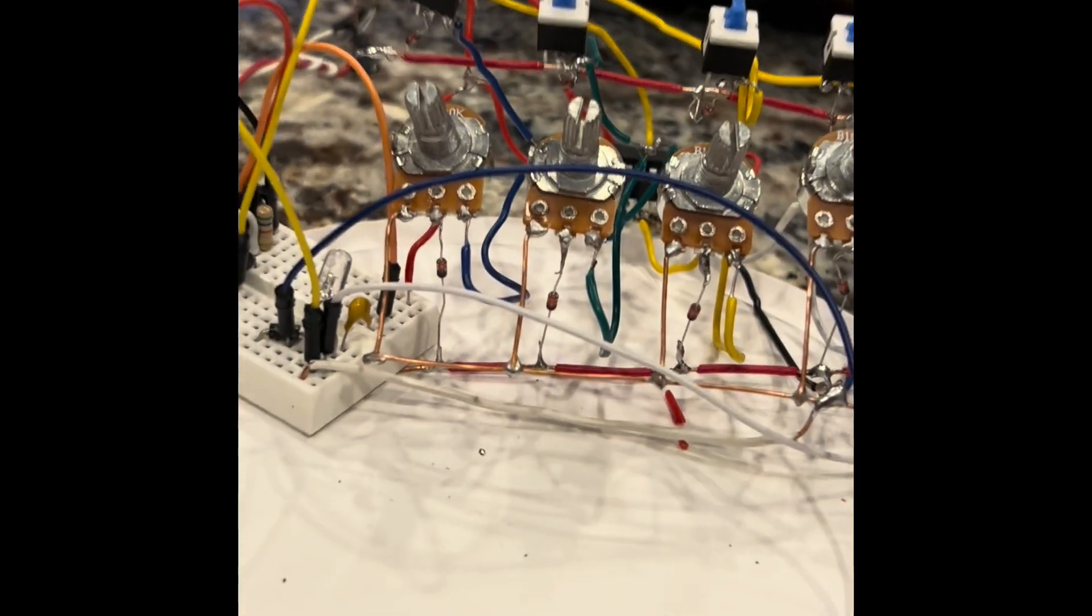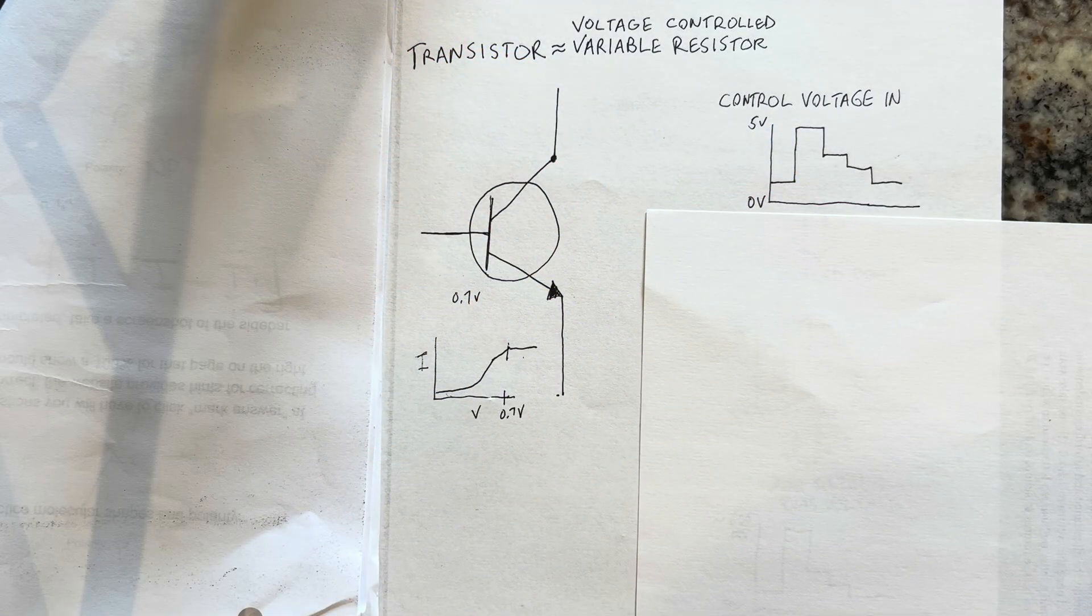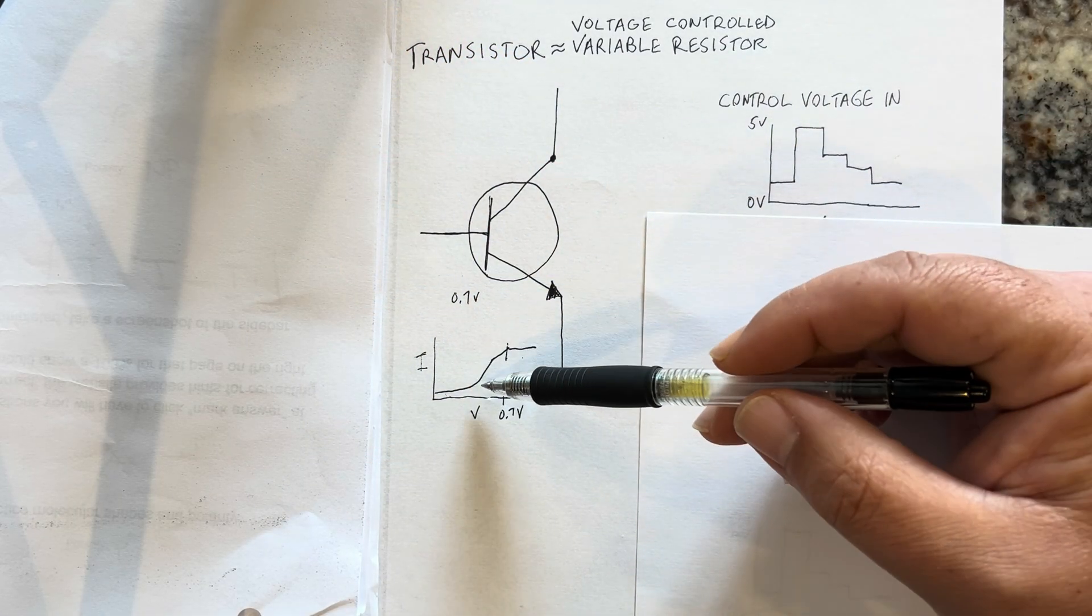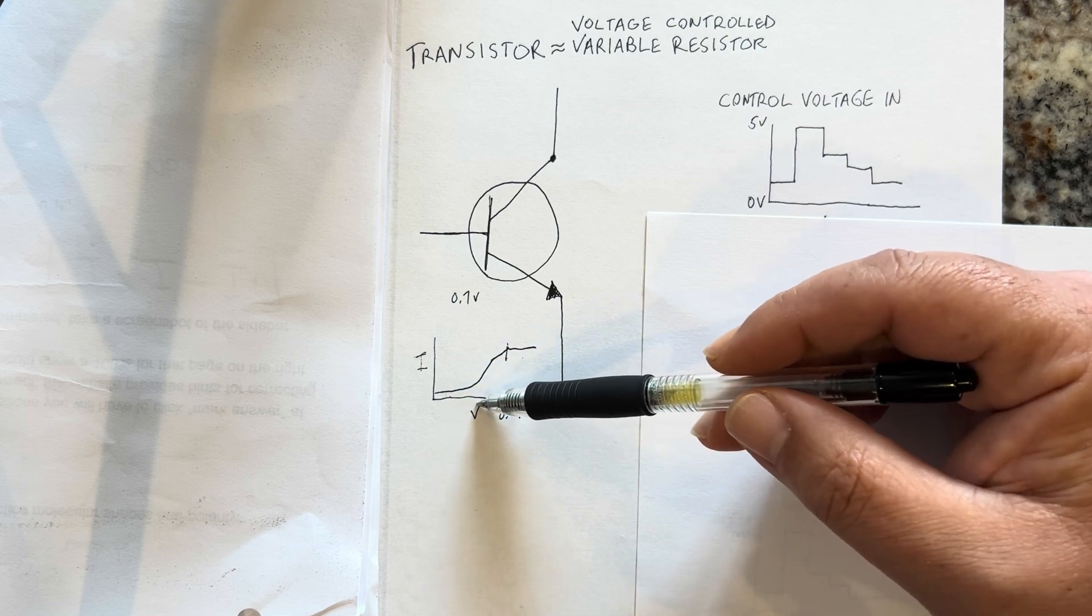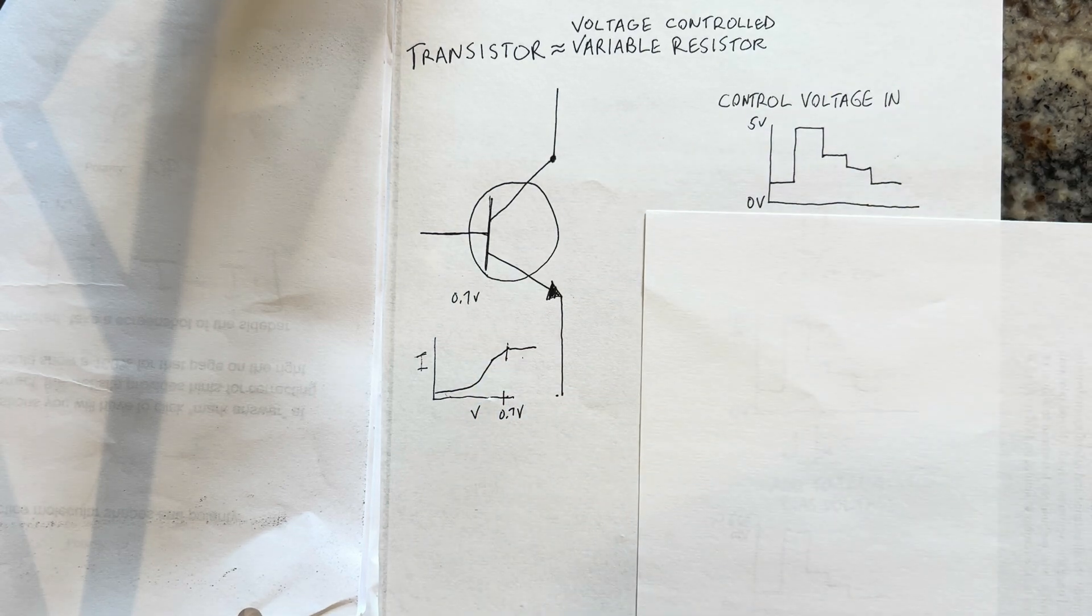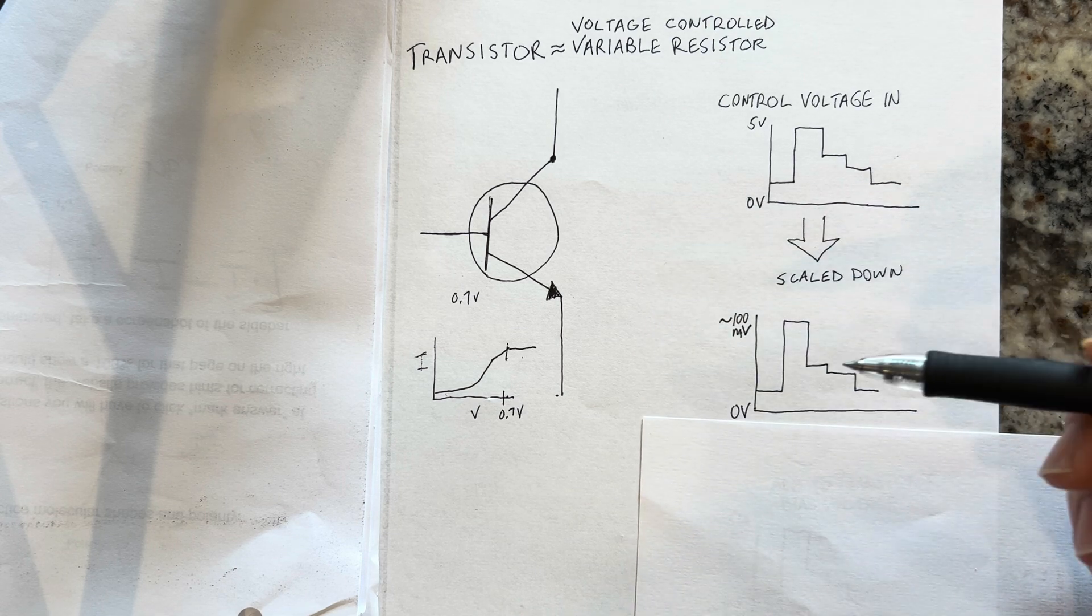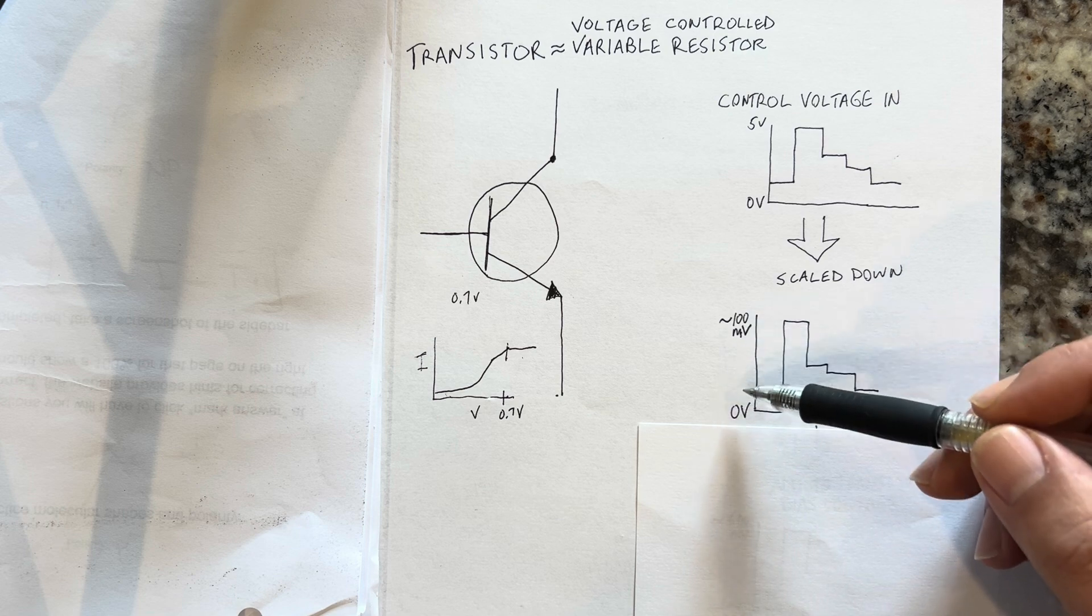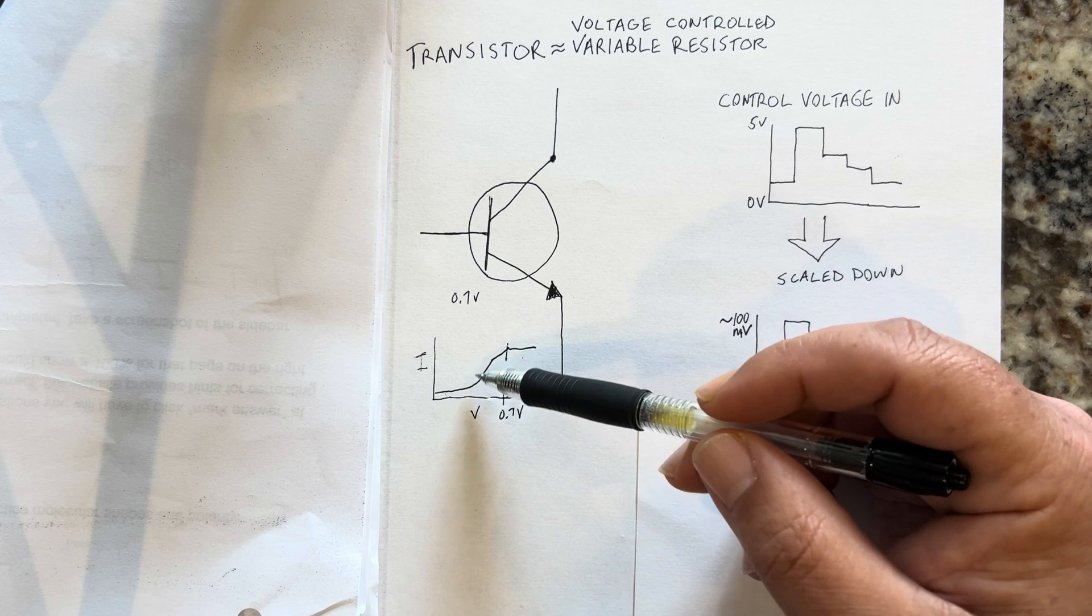The control voltage coming in here is in the range of 0 to 5 volts at each step set by the four different potentiometers. What we want to do with that is scale it down to a region that's in this voltage range, less than 0.7 volts.